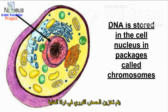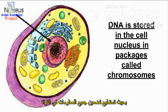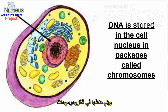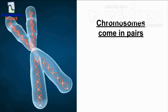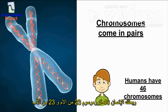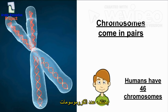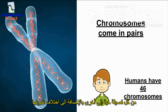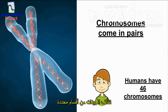DNA is stored in the cell nucleus. In order to fit all the information into the nucleus, it is packaged into chromosomes. Chromosomes come in pairs of two. A human has 46 chromosomes — 23 from your mom and 23 from your dad. The number of chromosomes varies from each species, as well as the composition of them.